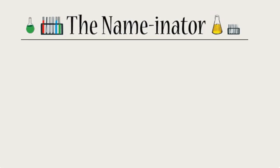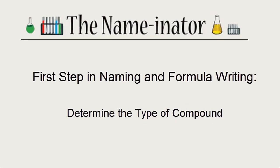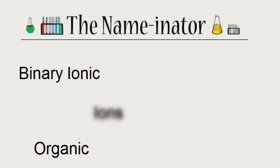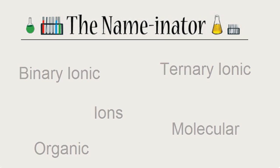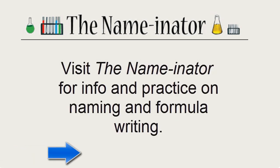To write the names or formulas for chemical compounds, the first step is to determine what type of compound you have. Once you know the type of compound, you can apply the rules for that compound. There are a number of different types of compounds. We'll focus primarily on the ones needed to be successful in a general chemistry course. We're not going to discuss the rules for naming or formula writing in this video, just how to tell the type of compound.